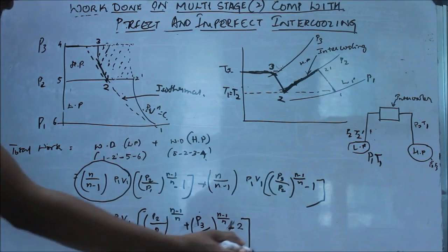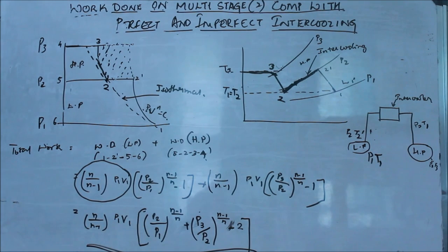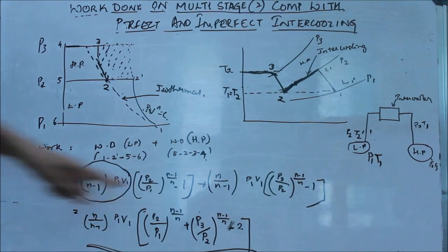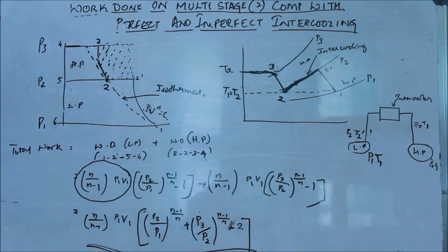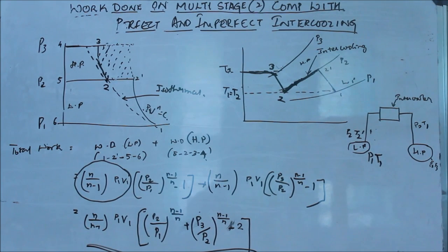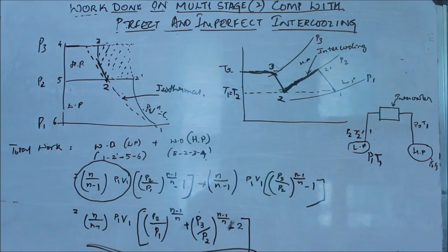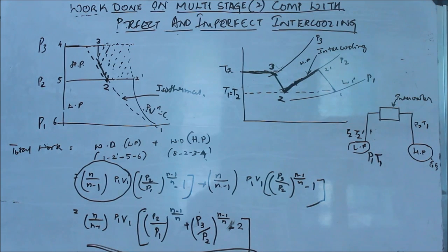So friends, this is the expression for work done on a multi-stage compressor with perfect intercooling. With imperfect intercooling, P2V2 remains as it is, so you cannot take out the common factor — that is the only difference. With perfect intercooling, efficient cooling of the air occurs, so the amount of work done is less compared to imperfect intercooling. Thank you.